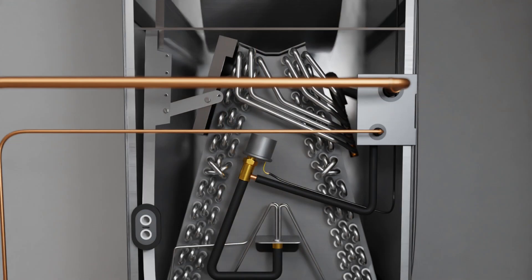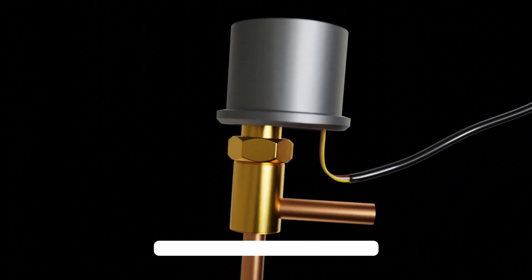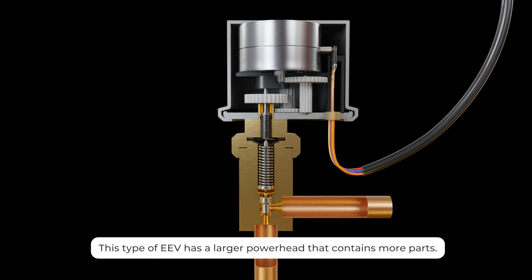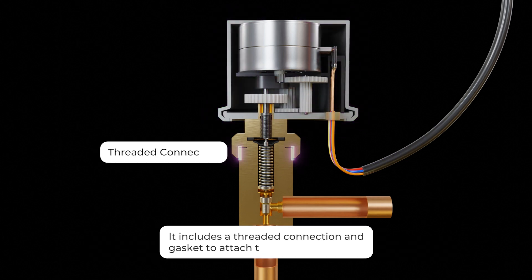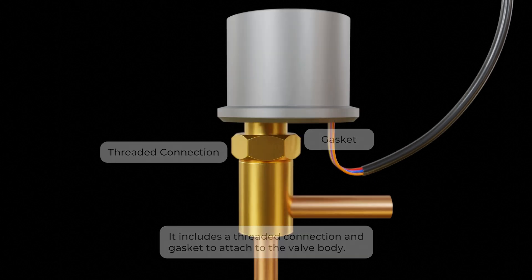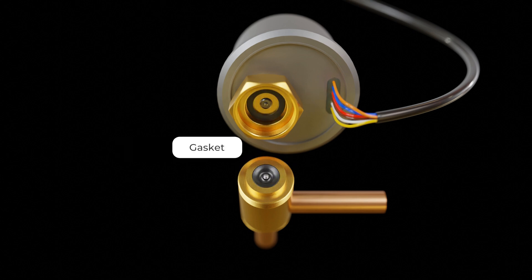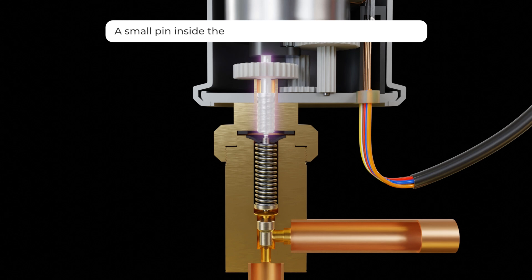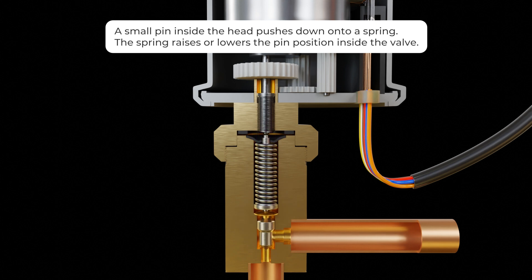The second type of EEV uses a direct drive motor instead of an indirect stepper motor. It's sometimes referred to as a gear driven expansion valve. This type of EEV has a larger power head that contains more parts including a threaded connection and gasket to attach the valve body. A solid connection allows a small pin inside the head to push down onto a spring which can raise or lower the pin position inside the valve.